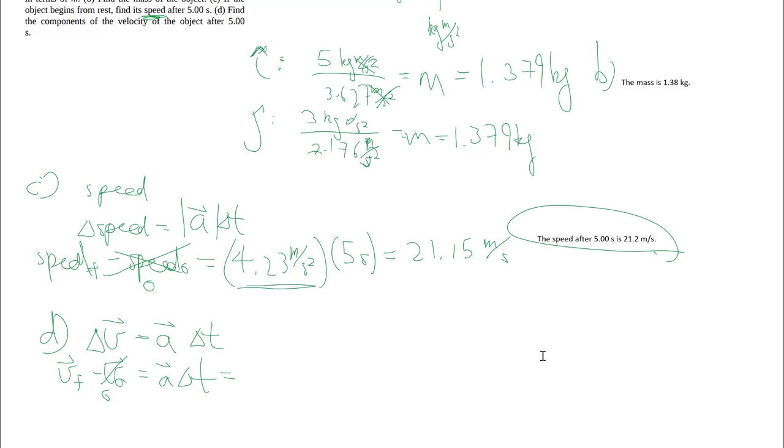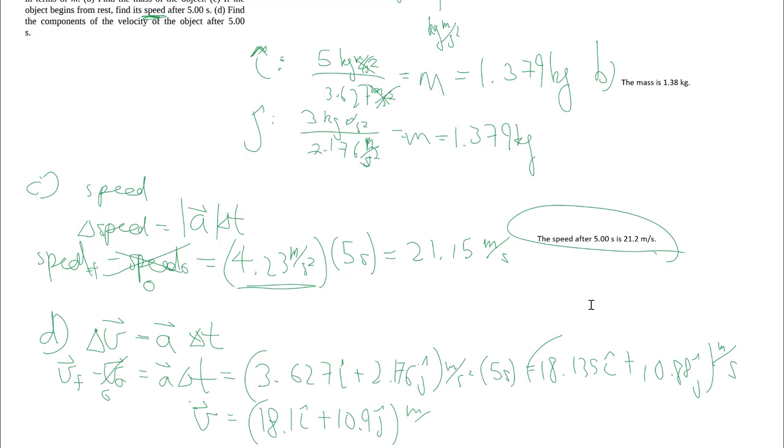So instead of using the magnitude now, we're going to use the whole vector. We got that from earlier in meters per second squared, times 5 seconds. So packaging in the final answer, we can say that this here is your x component, and that here is your y component, of course, such as unit vector notation.